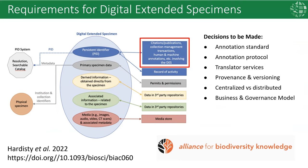But in order to realize the dream, we need to make some decisions at a global level, including defining an annotation standard, an annotation protocol, translator services, provenance and versioning, a centralized or distributed model, and importantly, a business and governance model, potentially involving the Alliance for Biodiversity Knowledge.